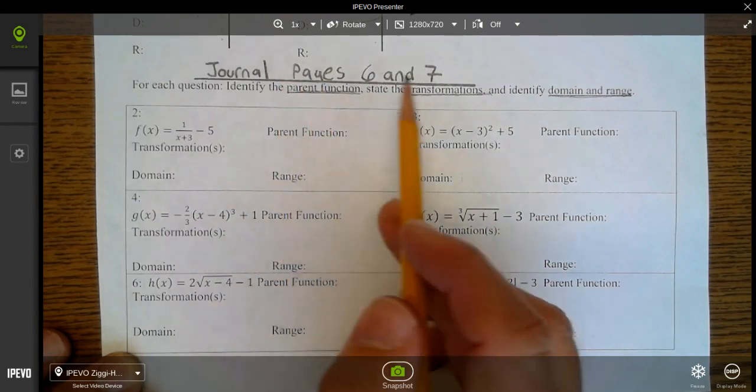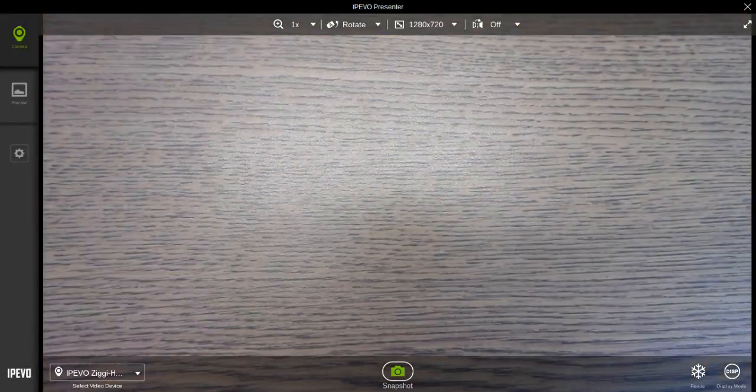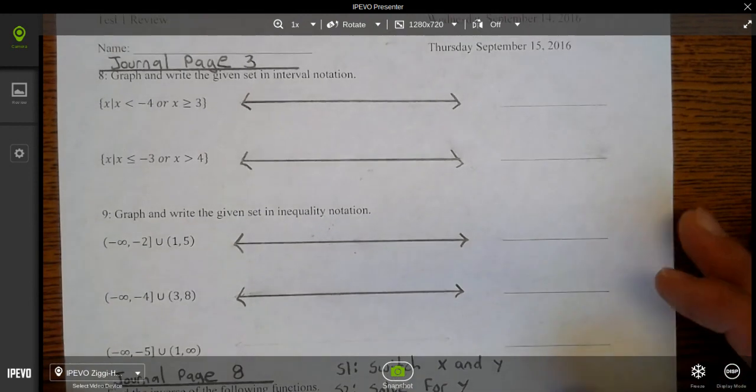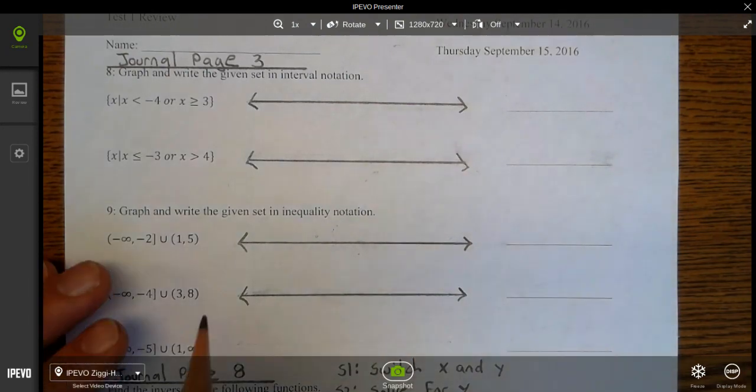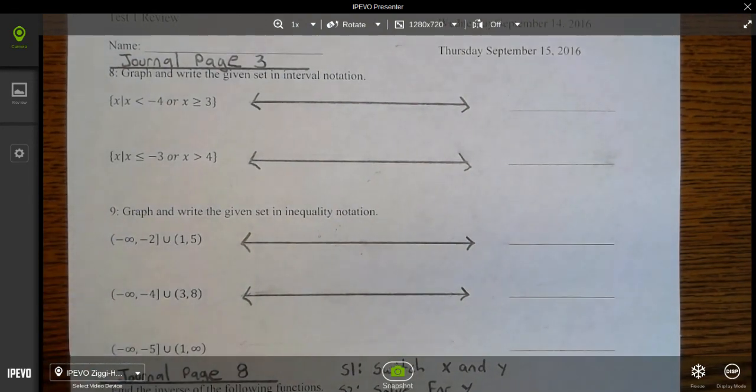Number 8 and 9 can be found on journal page 3. I am going to give you a little bit because I know on the quiz you took there was some confusion about interval and inequality notation.